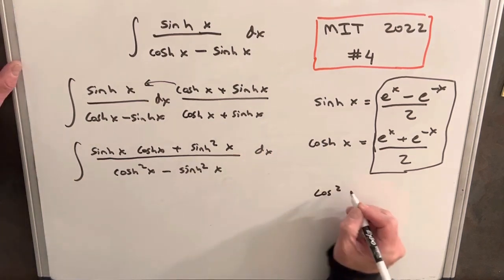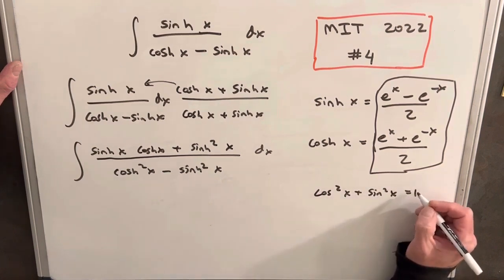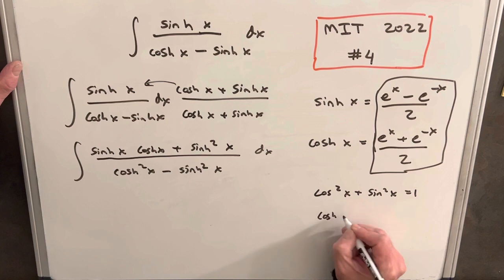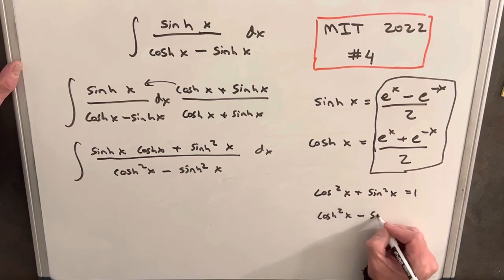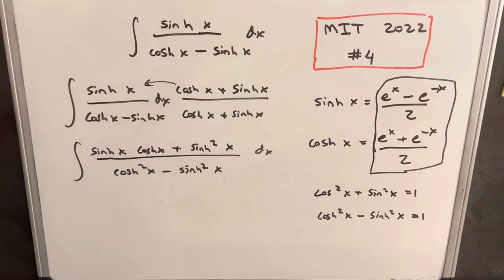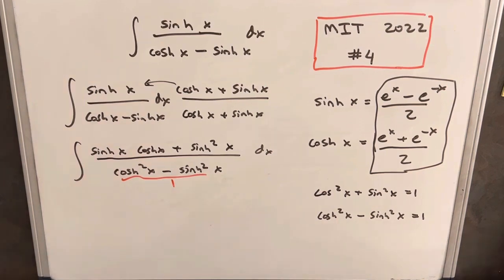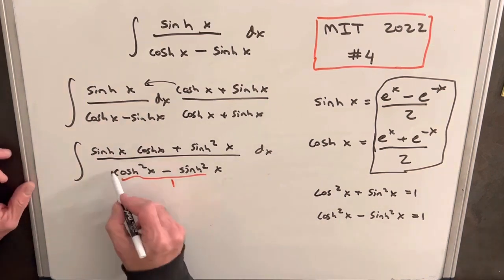And then very similar to the way we know that we have cosine squared x plus sine squared x equals 1, we have cosh squared x minus sinh squared x equals 1. So what we can do then is notice that this piece right here is just going to be 1. So we'll cancel that out.